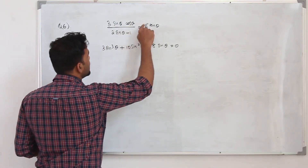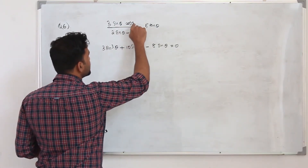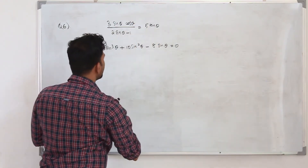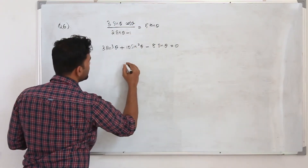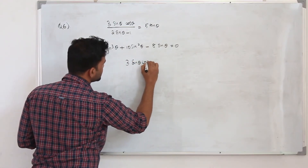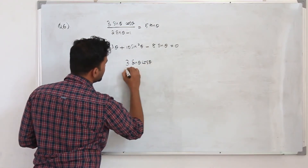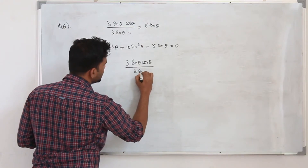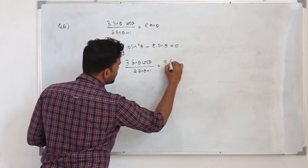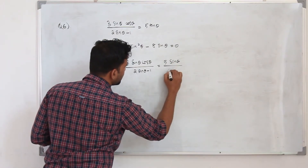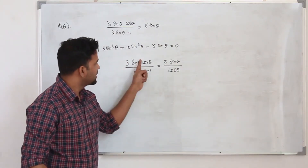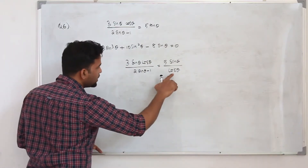I am going to keep cos θ as it is and write tan θ as sin θ over cos θ. So when you rewrite this, you get 3 sin θ cos θ divided by (2 sin θ − 1) equals 5 sin θ divided by cos θ. Then cross multiply.